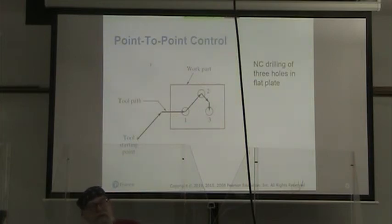Here's an illustration of how the tool would move during a point-to-point control. The tool starts here. It moves over to here. Then its tool path is over to position number one, where it drills a hole. It moves to position number two, where it drills a hole. And then it moves to position number three, where it drills a hole. You'll notice that the angles are all 45 degrees or 0, 90 degrees.